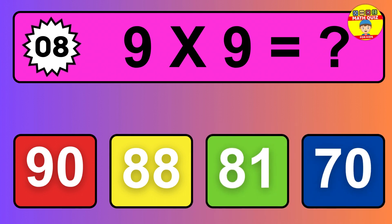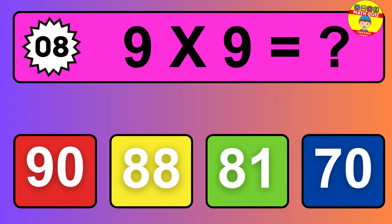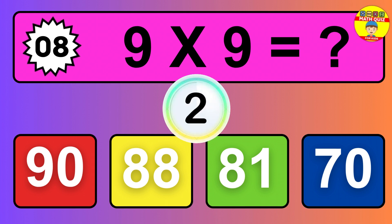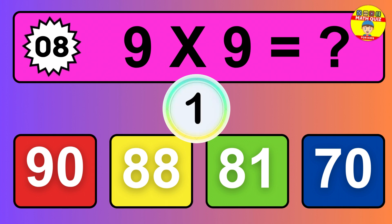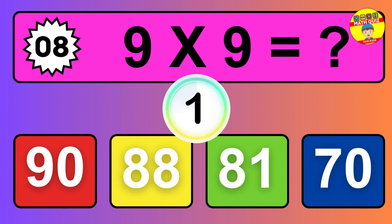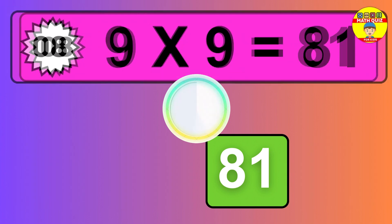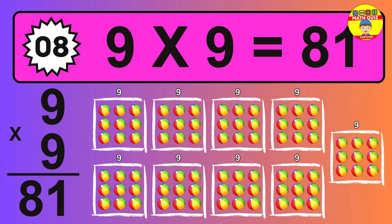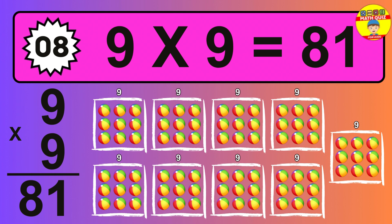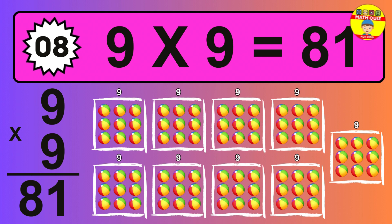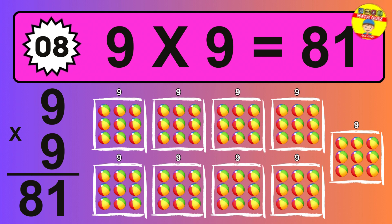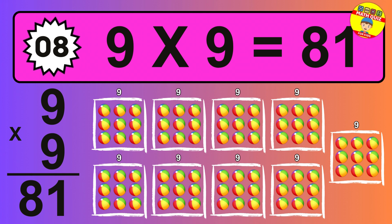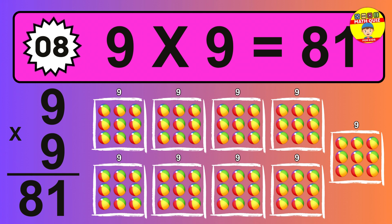Question eight. Nine times nine equals what? So the answer is nine times nine is 81. To calculate, we have nine groups with nine balls each one. So how many balls do we have? 81 balls.